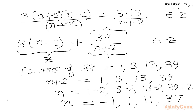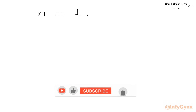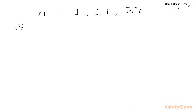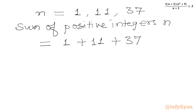The condition requires n to be a positive integer, so we reject n = -1. The valid values are n = 1, n = 11, and n = 37. The sum of all positive integers n is 1 plus 11 plus 37, which gives our answer of 49.